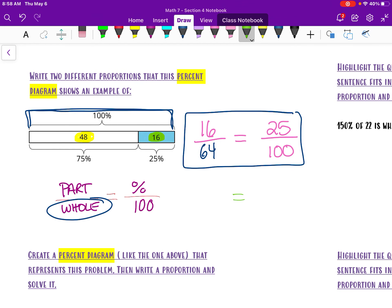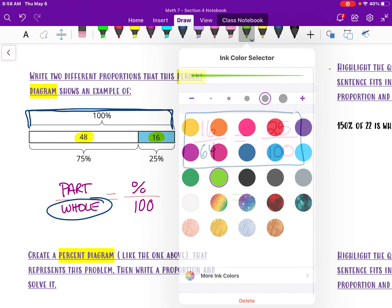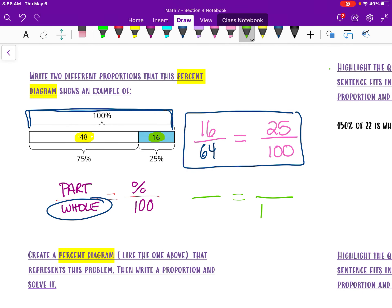Another proportion that you could set up here, I'm going to have my 100 because percents are always out of 100. Now, I already used this grouping. The 16 is 25%. So now I'm going to use the 48 part, which is 75%. So I know the 75 because it's a percentage. It has to go over 100. And a good strategy also that you could do is just put a percent sign here. Now I know that that matches with 48.